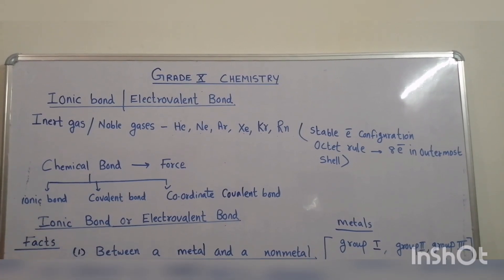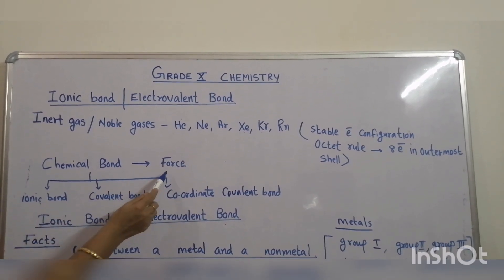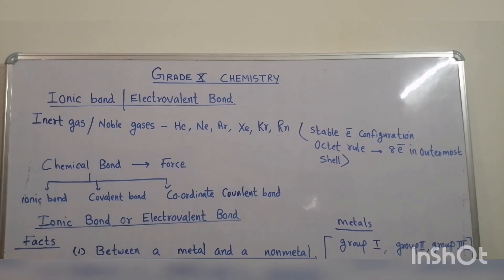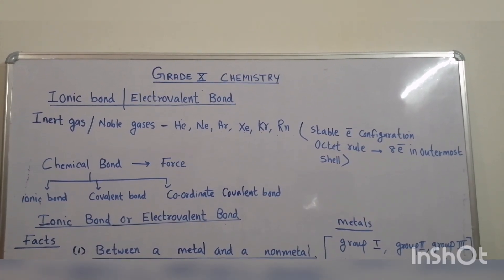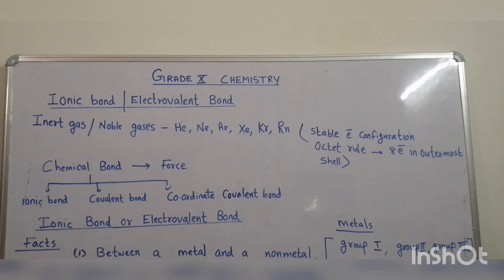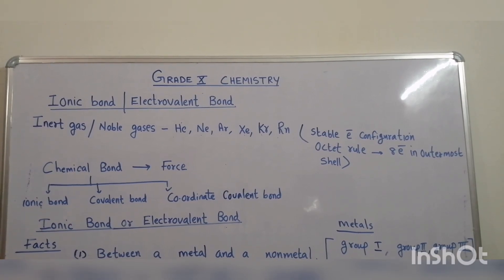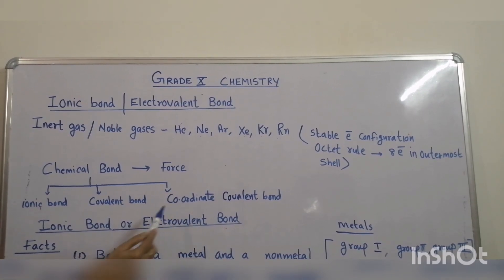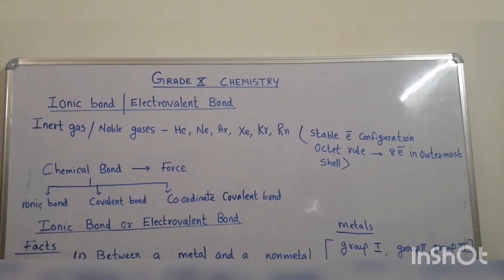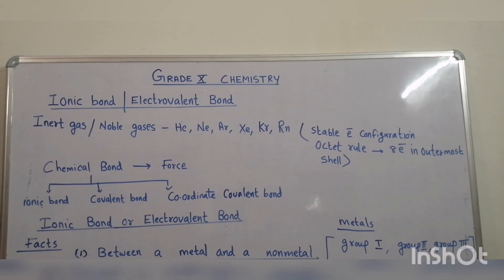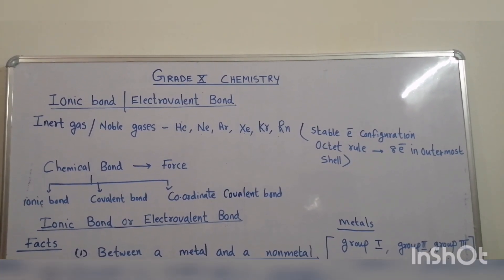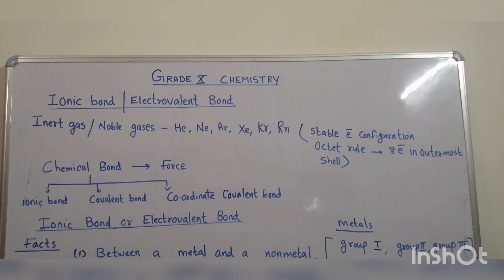What is a chemical bond? A chemical bond is a force that binds the elements together. There are 3 types of chemical bond: ionic bond, covalent bond, and coordinate covalent bond. Let us discuss about ionic bond or electrovalent bond.